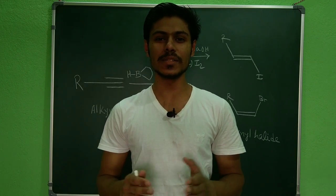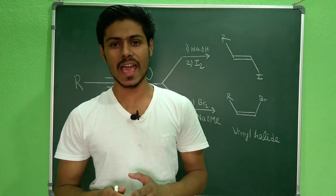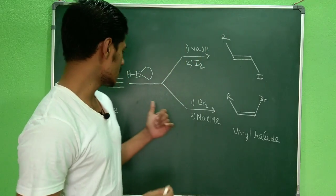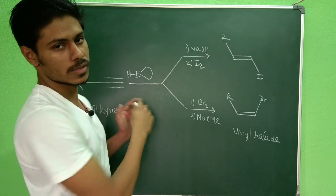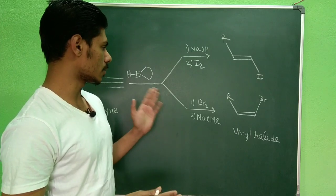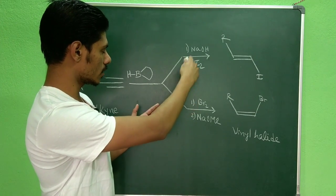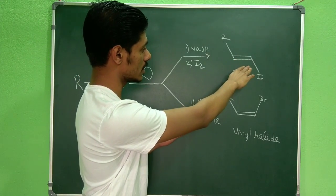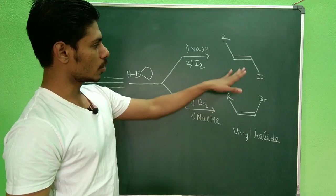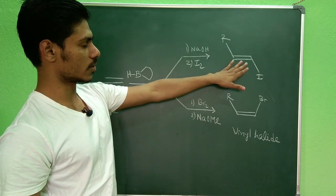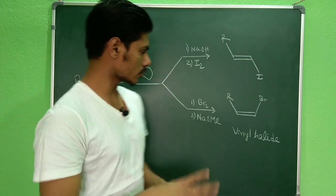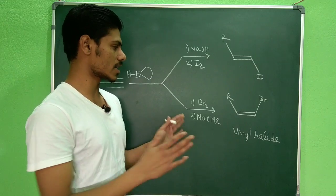Welcome to Chemistry Lover. In this video I will be discussing a very interesting question. This is a hydroboration reaction on an alkyne, and it is one of the elegant applications of the hydroboration reaction. After the hydroboration step, a second reaction step gives vinyl halides. The interesting part is that by using different strategies, two different isomers are obtained — in one case the trans product and in the other case the cis product.